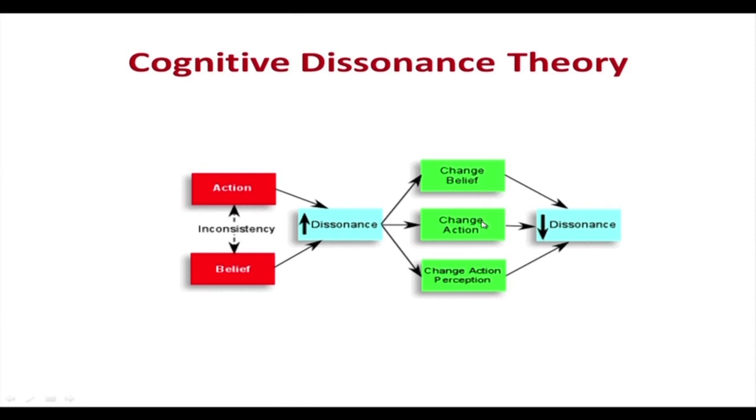In either case, the individual is trying to reduce the dissonance. When there is a change in belief, a change in action, or a change in action perception, there is a reduction of dissonance. The cognitive dissonance theory states that whenever there is a dissonance — when two existing beliefs, or a belief and an action, are at clash — we try to do something to bring down that disturbance within us, either by action or by changing the way we think.